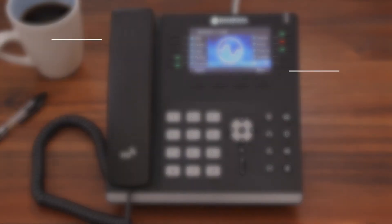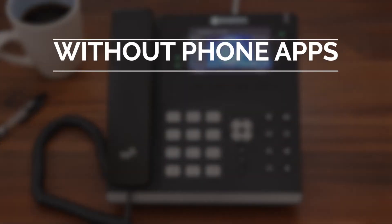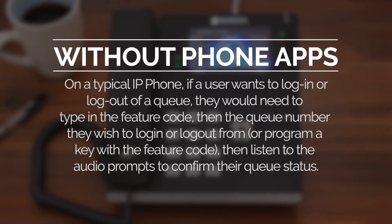Without phone apps, on a typical IP phone, if a user wants to log in or log out of a queue, they would need to type in the feature code, then the queue number they wish to log in or log out from, or program a key with the feature code, then listen to the audio prompts to confirm their queue status.